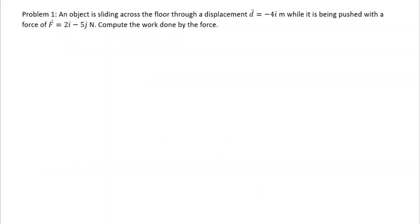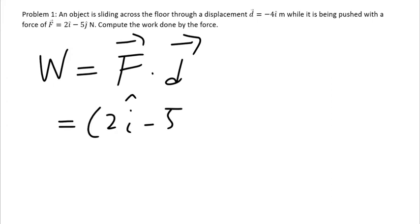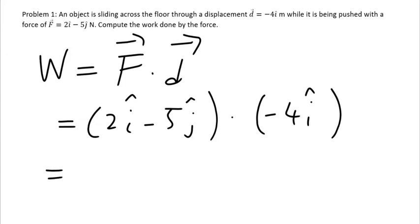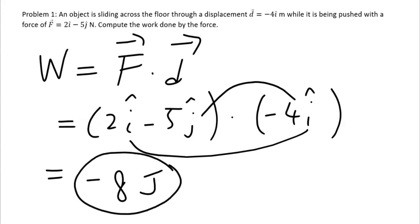Next problem: an object slides across the floor with displacement −4î while being pushed by a two-dimensional force. W = (2î − 5ĵ) · (−4î) = 2×(−4)×(î·î) + (−5)×(−4)×(ĵ·î) = −8 + 0 = −8 joules. The negative work means energy is being transferred out of the object, causing it to slow down.